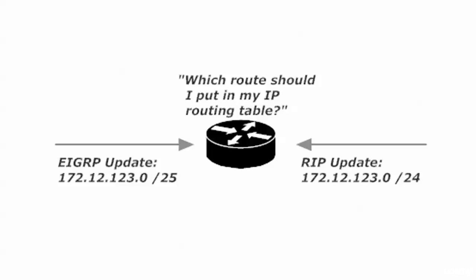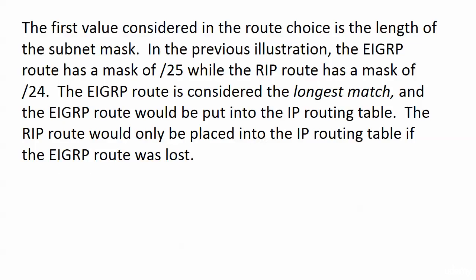Which route is it going to put into its IP routing table? Well, in this case, administrative distance does not matter, because the first value considered in this route choice is the length of the subnet mask. In that previous illustration, the EIGRP route had a mask of /25, while the RIP route has a mask of /24. This is what we call the longest match. That EIGRP mask is going to match the first 25 bits; RIP is matching 24, so EIGRP is considered the longest match and the EIGRP route would be put into the IP routing table. It doesn't mean there's anything wrong with the RIP route — it's just that the EIGRP route is considered superior.